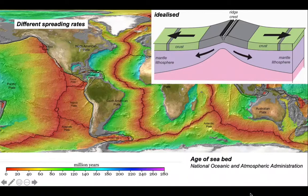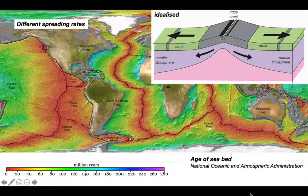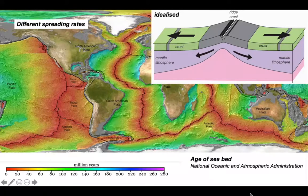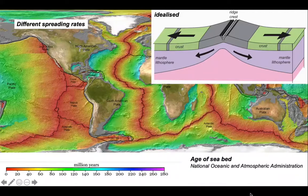The impact of different spreading rates is seen in the map. The Atlantic only has a thin strip of young crust, so it's a slow spreading area, compared to the East Pacific where the young crust extends for a much greater distance.